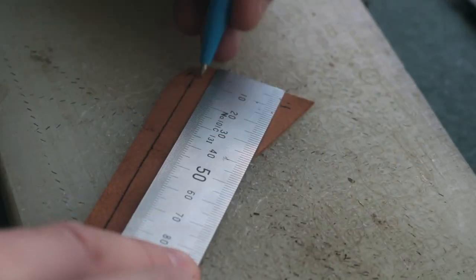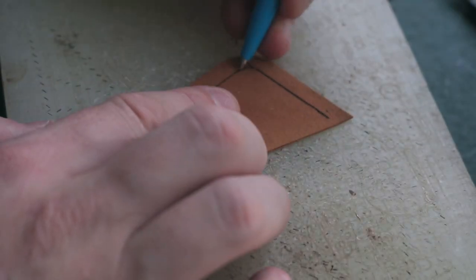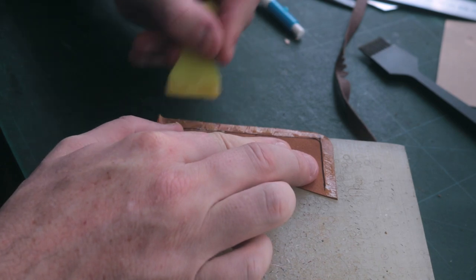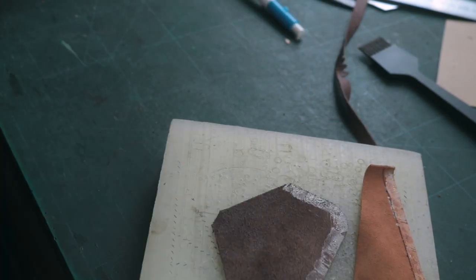I want the piping to be sticking out two millimeters, so I am tracing a line that I will use as a guide.